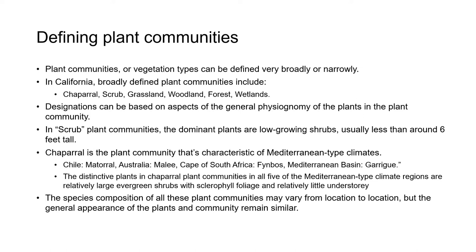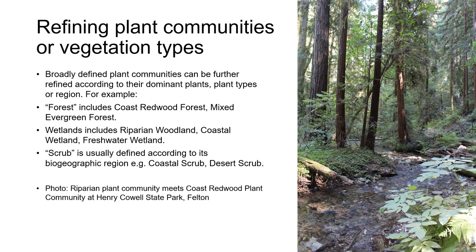The species composition of all of these plant communities may vary from location to location, but the general appearance of the plants and the community in general remains similar. The broadly defined plant communities can be further refined using their dominant plants, their plant types, or the region. For example, forests can be refined into coast redwood forest or mixed evergreen forest. Wetlands can include riparian woodland, freshwater marsh, and saltwater marsh. Scrub is usually refined according to its biogeographic region, giving us coastal scrub and desert scrub.